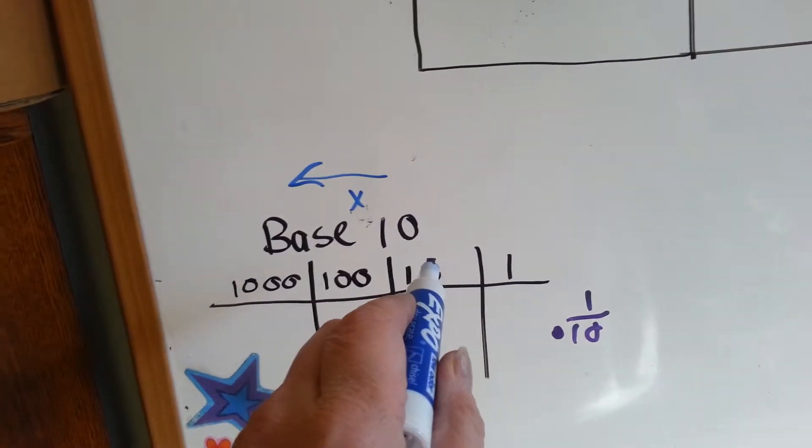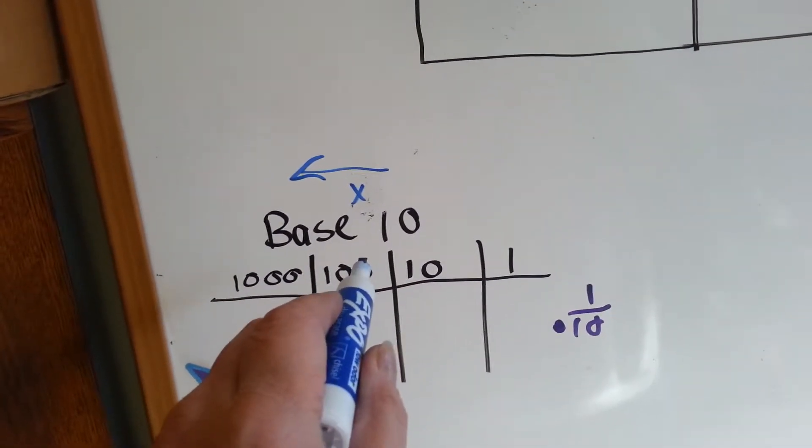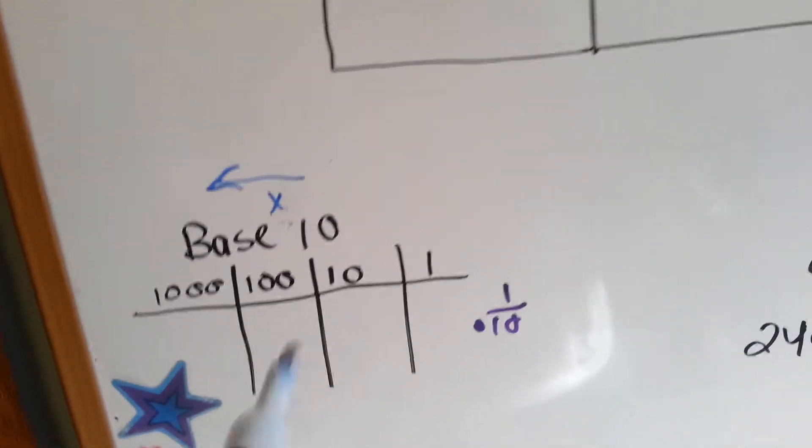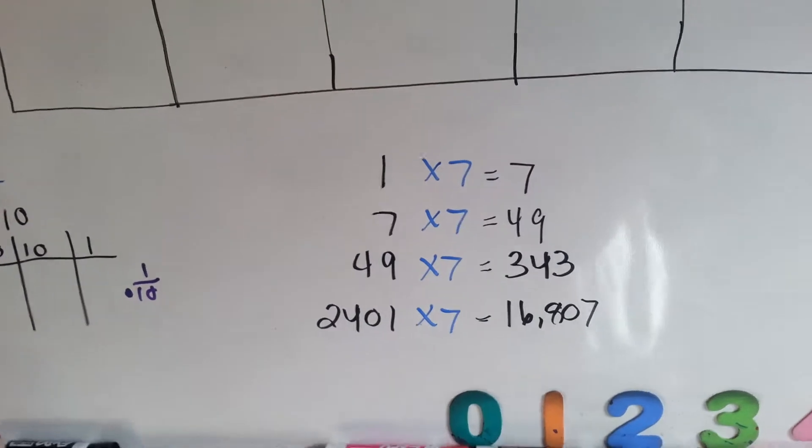One times ten is ten, ten times ten is a hundred, a hundred times ten is a thousand, etc. And we just keep multiplying by ten going that way. Well, in base seven, we multiply by sevens.